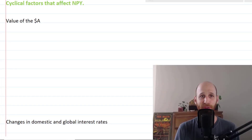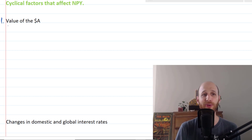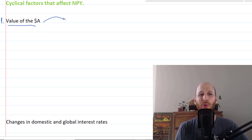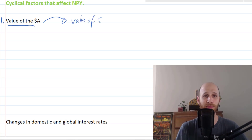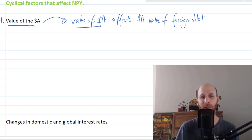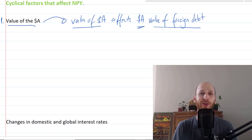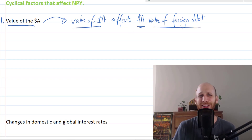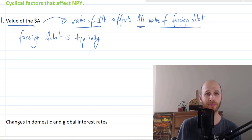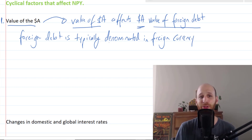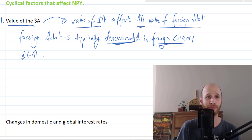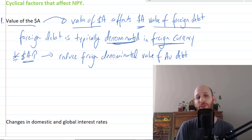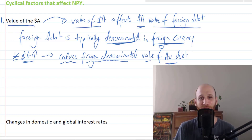Now let's look at the cyclical factors that affect the value of NPY. The first cyclical factor is the value of the Australian dollar. The value of the Australian dollar will affect the Australian dollar value of foreign debt, because foreign debt is often denominated — kept track of — in foreign currency terms. Foreign investors don't really need Australian dollars; they want their own currency. So foreign debt is typically recorded in foreign currency values.